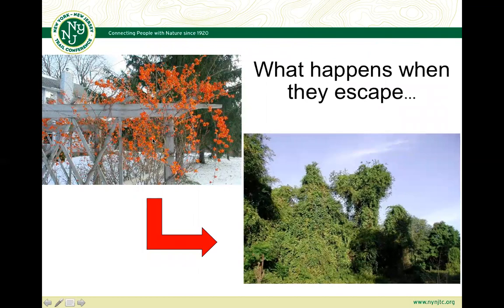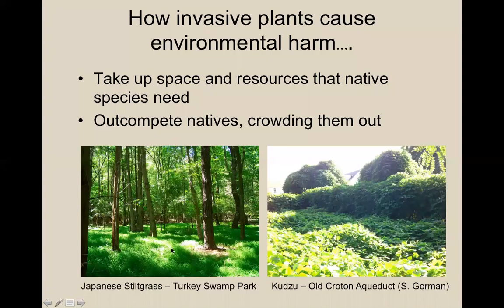Invasive plants take up space and resources that native species need, out-competing them. They find a niche in the new ecosystem and crowd out natives. Japanese stiltgrass, for example, totally overtakes forest understories, and kudzu — an emerging invasive in New York State — blankets and covers native species, preventing growth beneath it. Invasive species are successful because they tolerate a variety of habitat conditions and reproduce rapidly with high germination rates.